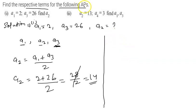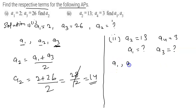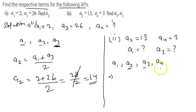Similarly, for the second question, we are having a2 equal to 13 and a4 equal to 3, and we have to find a1 and a3. We can write out the sequence as a1, a2, a3, a4. We are given a2 and a4, so we will first find a3.